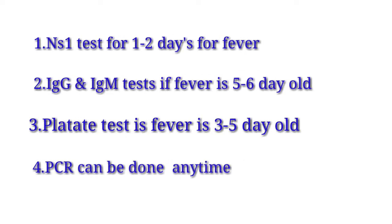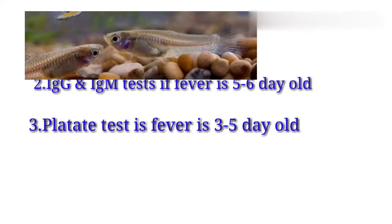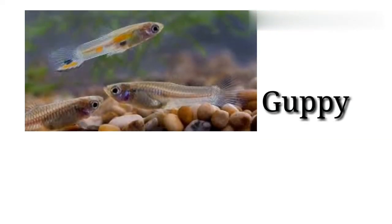IgG indicates that we have dengue. This is our preparation for the virus. This is the Nucleic Acid Amplification Test, which is very normal.